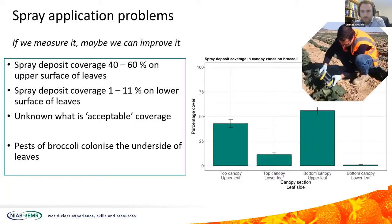You can't improve what you don't measure — a quote borrowed from business management but quite applicable in crop protection and spray application. Over the past few years we've been developing a tool for measuring spray deposition quickly and easily, directly on crop surfaces. We've used a handheld imaging fluorimeter to look at spray deposition on a wide variety of crops in a wide range of situations.